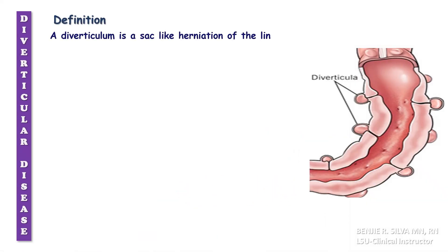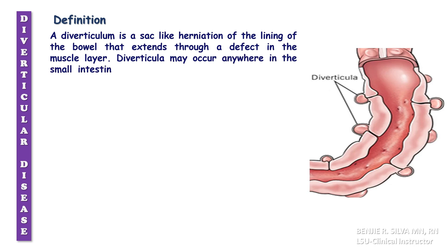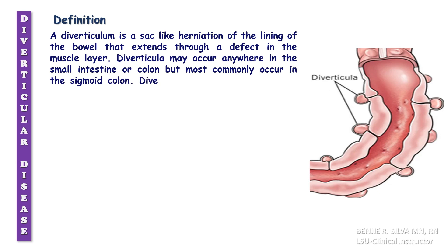A diverticulum is a sac-like herniation of the lining of the bowel that extends through a defect in the muscle layer. Diverticula may occur anywhere in the small intestine or colon but mostly occur in the sigmoid colon.